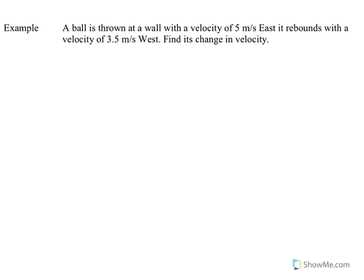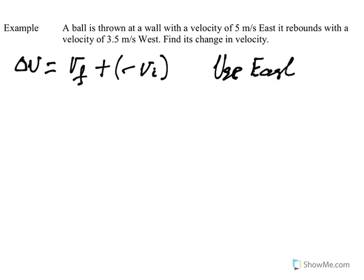This one here, a ball is thrown at a wall with a velocity of 5 metres per second east. It rebounds with a velocity of 3.5 metres per second west. Find its change in velocity. Remember that change in velocity is our final plus the negative of our initial. If we use east as the positive direction. Then our final velocity, which is 3.5 metres west. West is opposite to east, so that would be negative 3.5 metres per second.